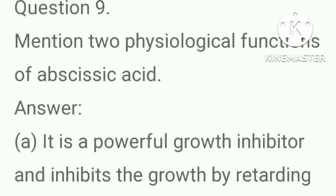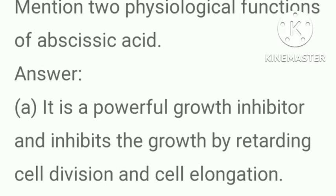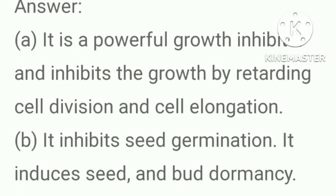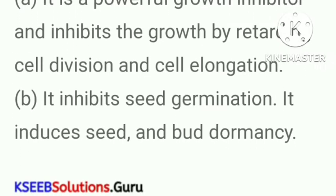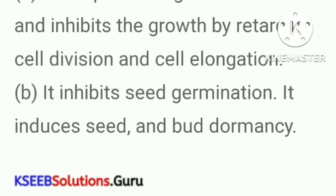Mention two physiological functions of abscisic acid. Answer: It is a powerful growth inhibitor and inhibits growth by retarding cell division and cell elongation. It inhibits seed germination. It induces seed and bud dormancy.